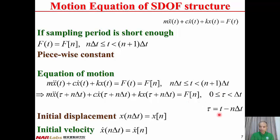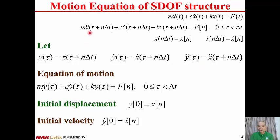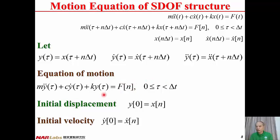F_n is constant. The time interval now becomes from 0 to delta T. When tau equals 0, T equals n delta T. Therefore, the initial displacement is x(n delta T) = x_n, and the initial velocity is x-dot(n delta T) = x-dot_n. Letting y(tau) = x(tau + n delta T), y-dot(tau) = x-dot(tau + n delta T), and y-double-dot(tau) = x-double-dot(tau + n delta T), and substituting into the ODE, the equation of motion becomes M y-double-dot plus C y-dot plus Ky equals F_n.